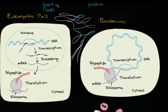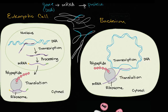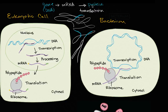We already saw in the video on transcription that the first step is to go from the gene to messenger RNA. The RNA — the messenger RNA — you can view it as a transcript. We have rewritten the information now as RNA. The next step, which we're going to dive into in this video, is going from that messenger RNA to protein. This process is called translation, because we're literally translating that information into a polypeptide sequence.